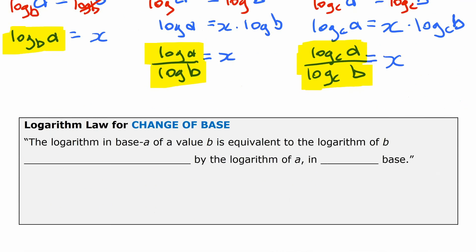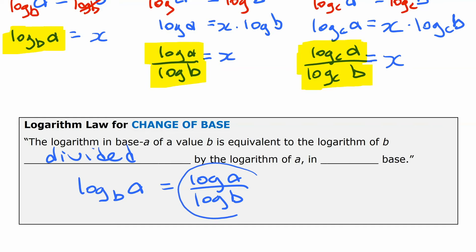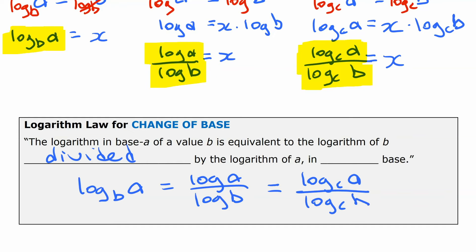So to write it out: the logarithm base a of some value b is equivalent to the logarithm of b divided by the logarithm of a. More specifically, log base b of a equals log a divided by log b. Most of the time that's what you'll use — changing things to base 10 to use a calculator — but in general you can use any base: log base c of a over log base c of b. That's the change of base rule. Now let's do a few things with it.